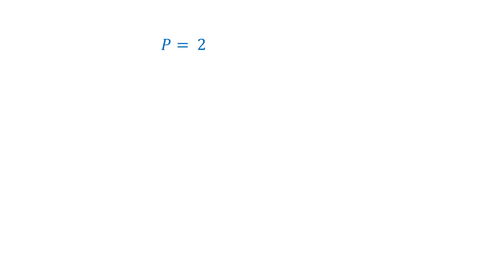So we have the probability p = 2·√(1/π) times the integral from z₀ to ∞ of e^(−z²) dz. Now we need to find the value of z₀.